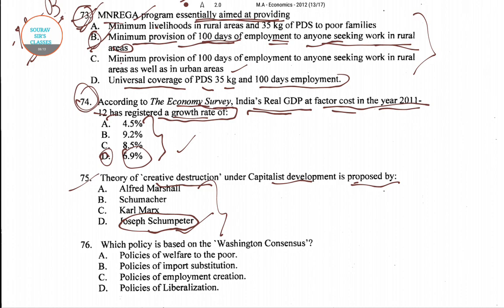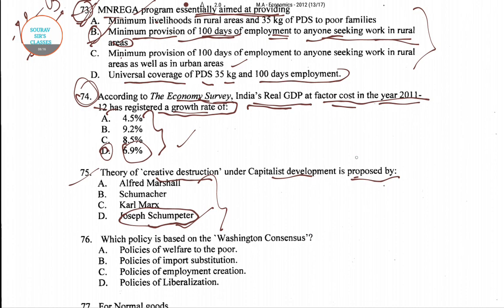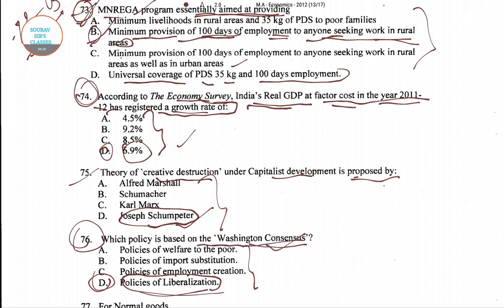Question number 76 asks: which policy is based on the Washington Consensus? The answer is the policy of liberalization, which is option D. For question number 76, option D is the right answer — the policy of liberalization is based on the Washington Consensus.